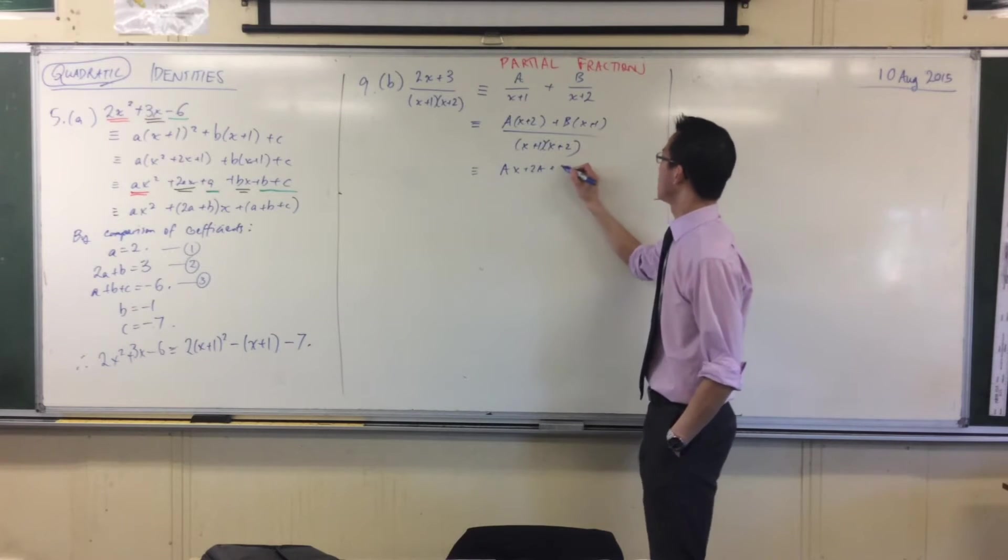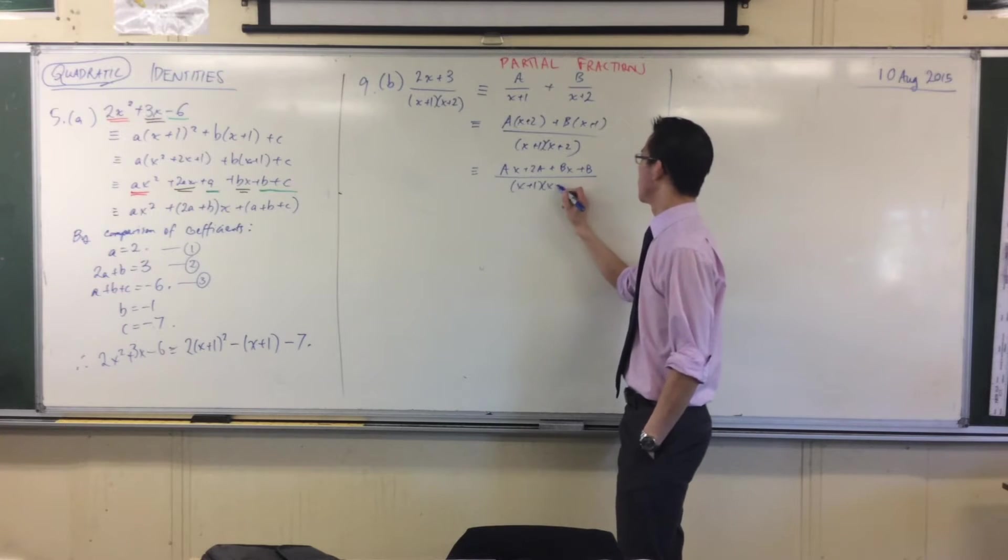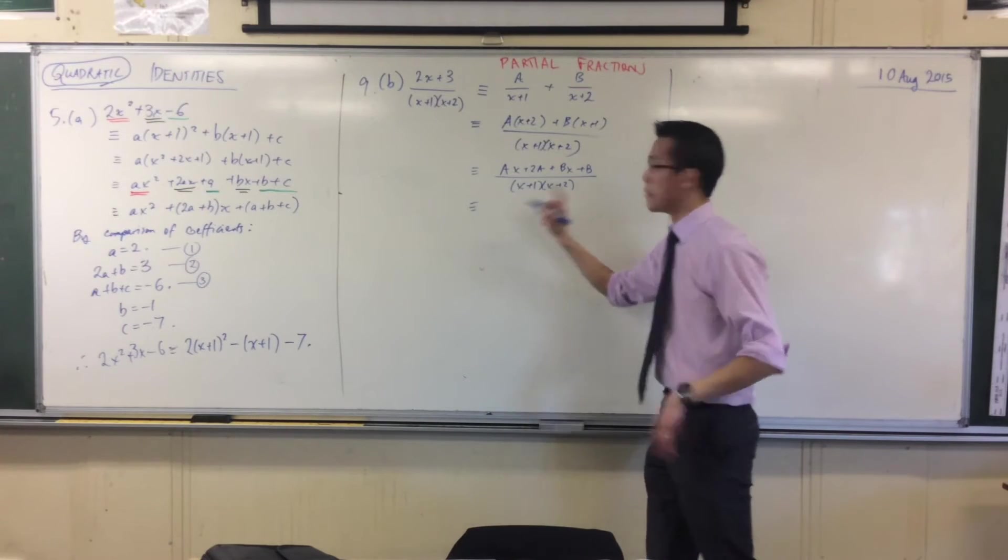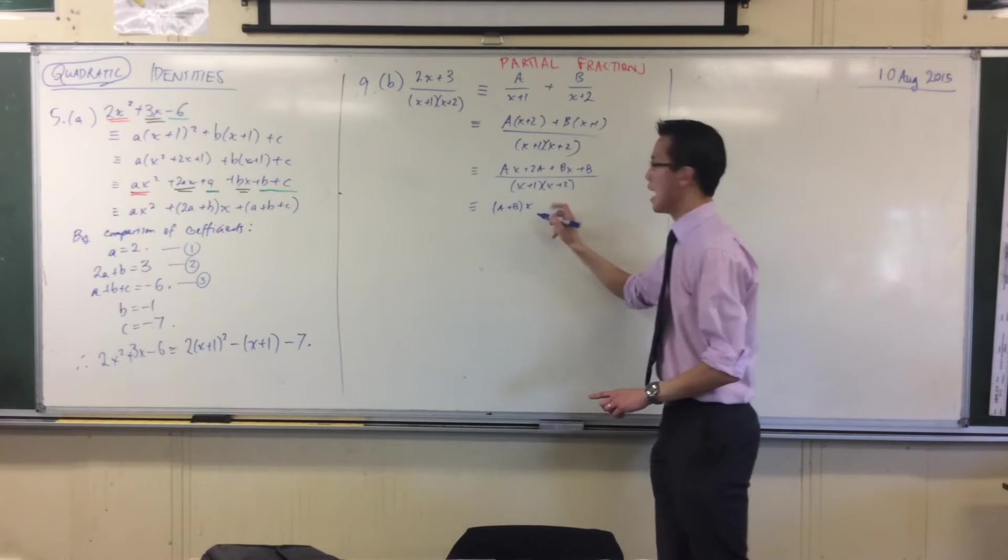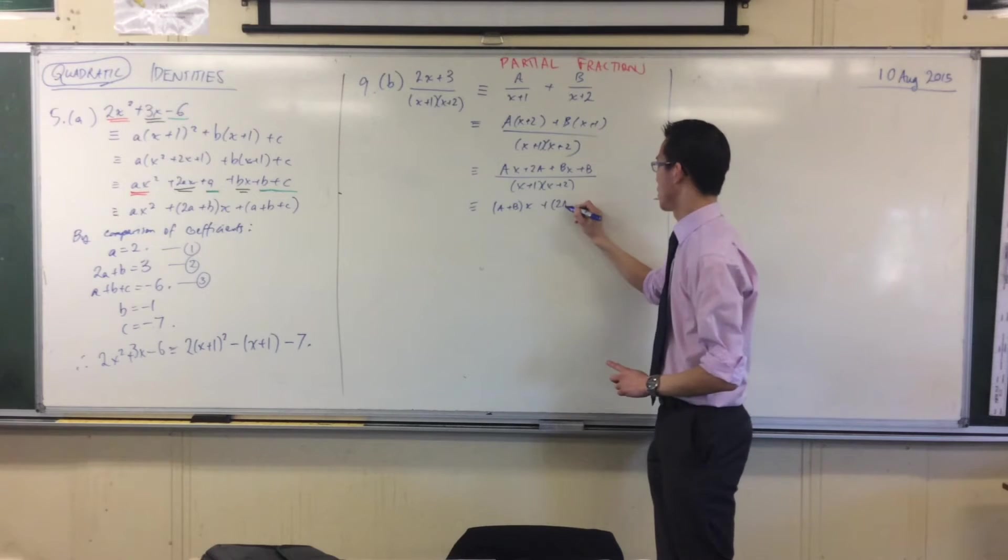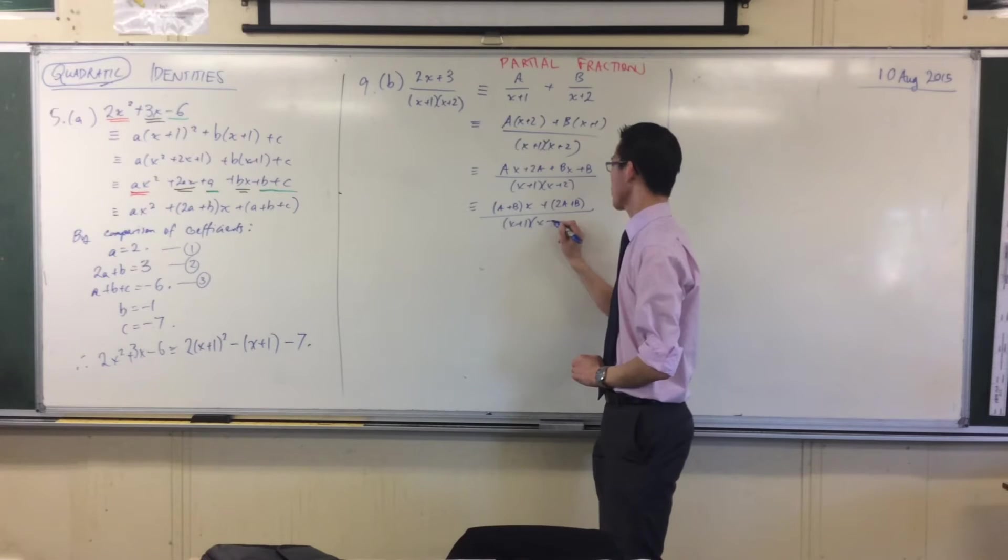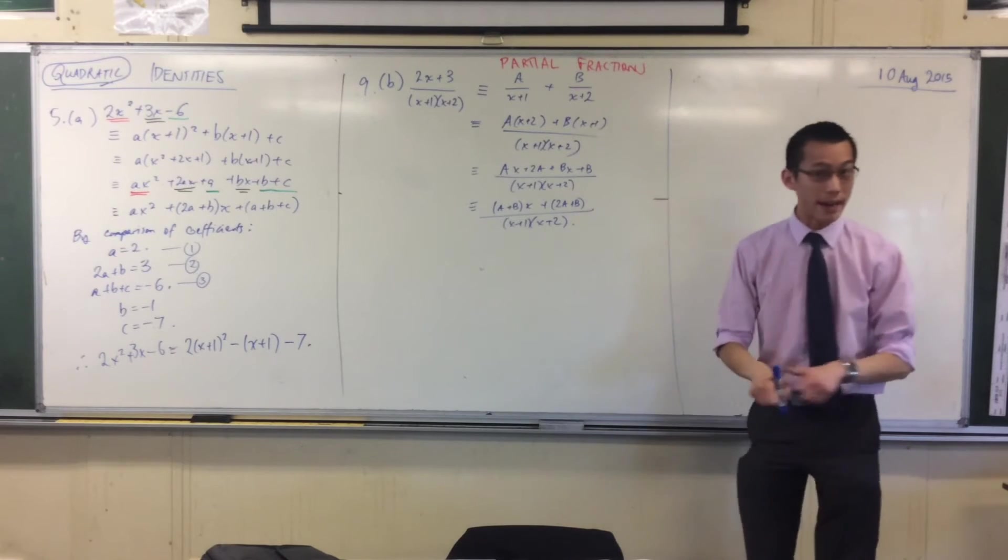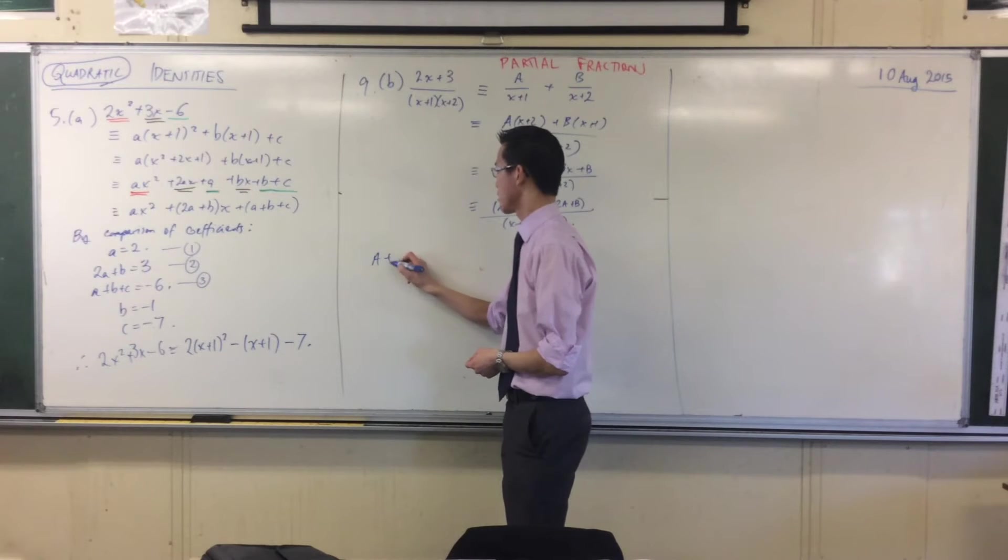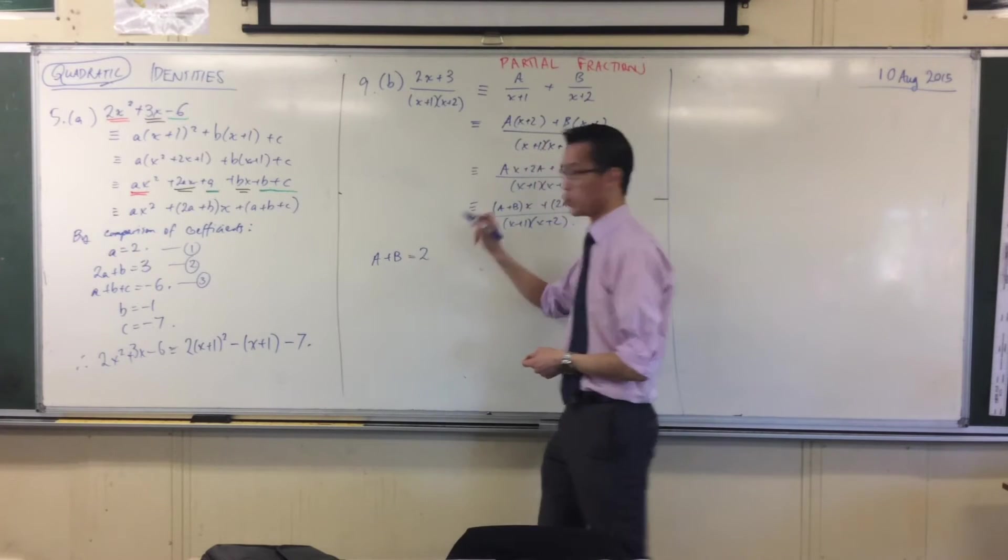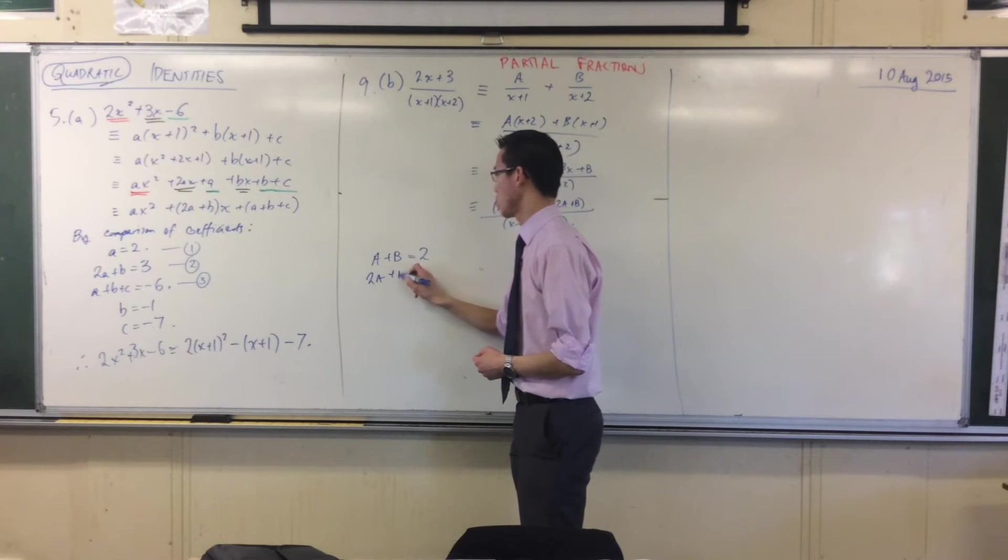So what have I got here? Ax plus 2a, plus bx plus b. Match up your x terms. I've got a plus b. And then I've got my constant terms hanging off on the end, which is 2a plus b. Let's compare. Once I compare the two, my a plus b, that's going to be equal to 2. My 2a plus b, that's going to be equal to 3.